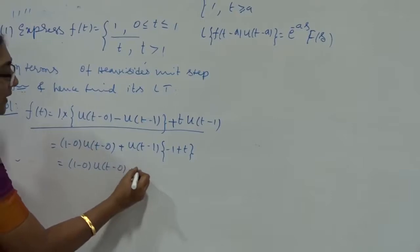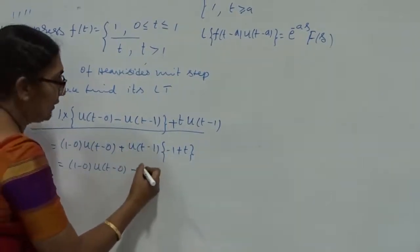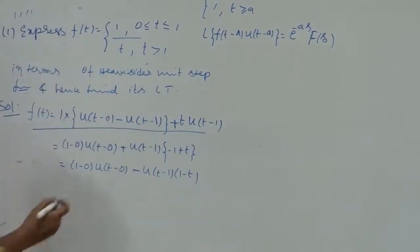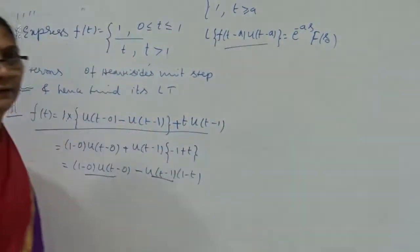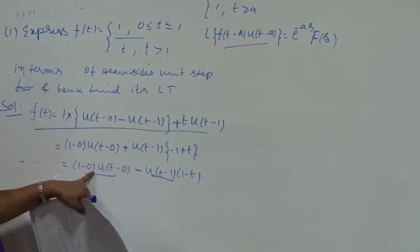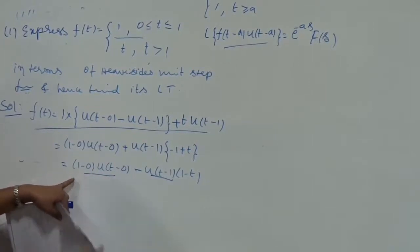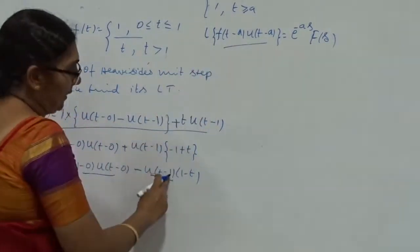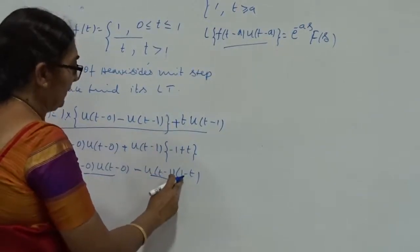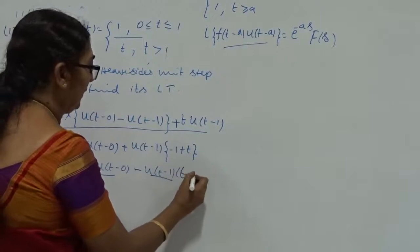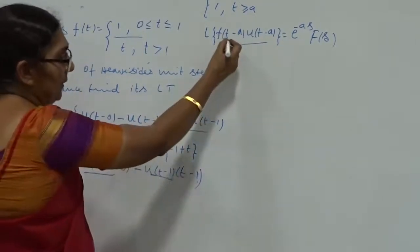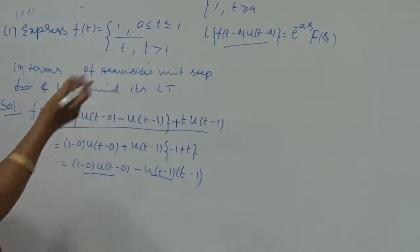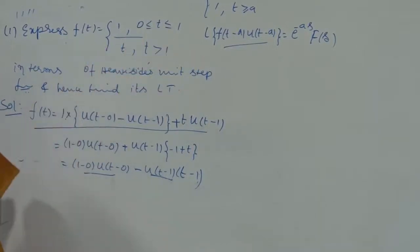We need to express the bracket function also in the form T minus 1, since A is 1. So 1 can be written in the form of F of T minus A with A equal to 0, and also with A equal to 1. Taking minus 1 outside, we get U of T minus 1 into (1 minus T). After rearranging, both terms are now in the form F(T minus A) into U(T minus A). Now we can go for the Laplace transform.